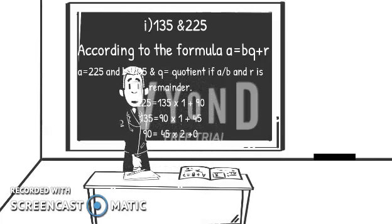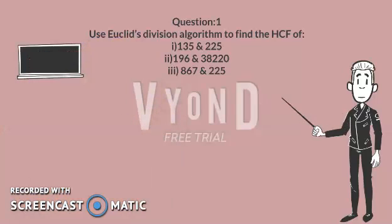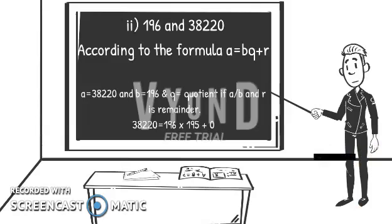The next one is 196 and 38,220. We use the division algorithm for this as well. In fact, we must use it always for finding HCF. Here we take 38,220 as A and 196 as B. Now we get a simple solution for this. The set turns out with a remainder of 0. The set is 38,220 equals 196 times 195 plus 0. Hence the HCF is 195. And we have completed the second one.